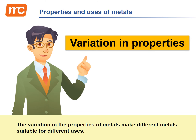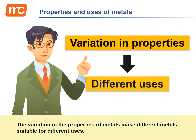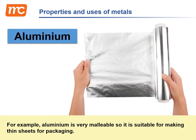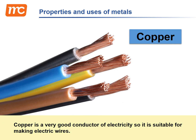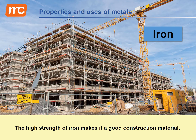The variation in the properties of metals makes different metals suitable for different uses. For example, aluminum is very malleable so it is suitable for making thin sheets for packaging. Copper is a very good conductor of electricity so it is suitable for making electric wires. The high strength of iron makes it a good construction material.